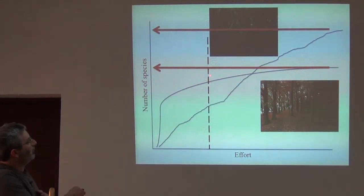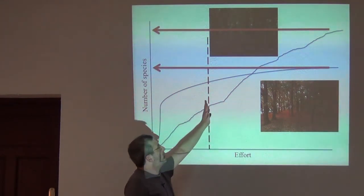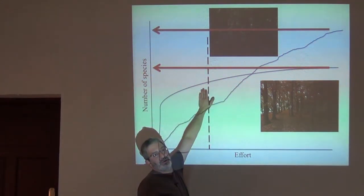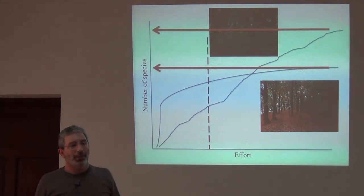But if we stop with an effort-based cutoff, notice what happens. Here we stop with this number of species and here we stop with this number of species. So notice that with effort, we are essentially stopping when one inventory is almost done and the other inventory is just getting started.